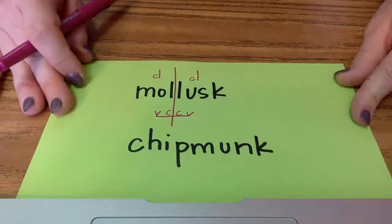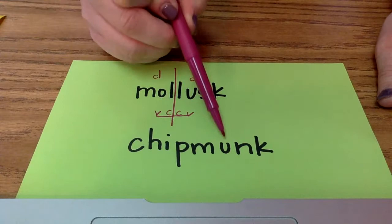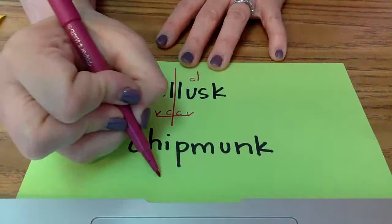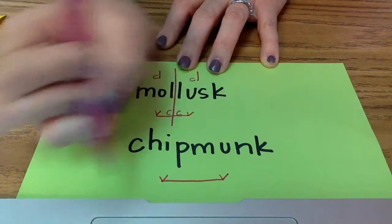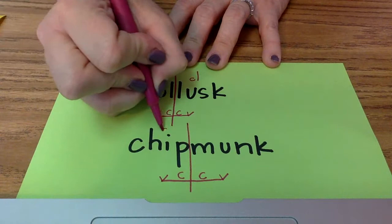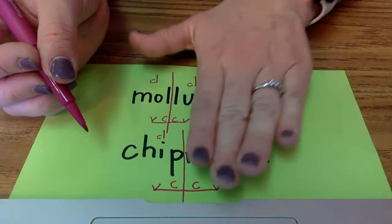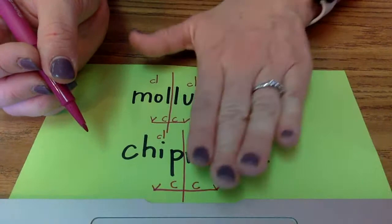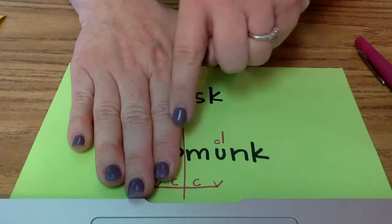Okay. Let's try our next one. Write this word: C-H-I-P-M-U-N-K. Okay. Vowels first. I and U. Draw a bridge. Consonant, consonant. I'm going to break it here. I've got a closed vowel and a closed vowel. Remember, closed means that the syllable ends in a consonant. All right. C-H-I-P, M-U-N-K. Chipmunk. Chipmunk.